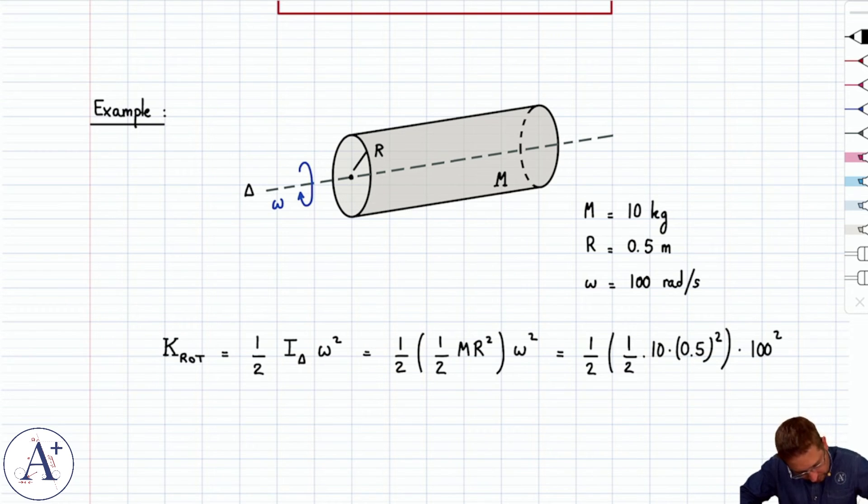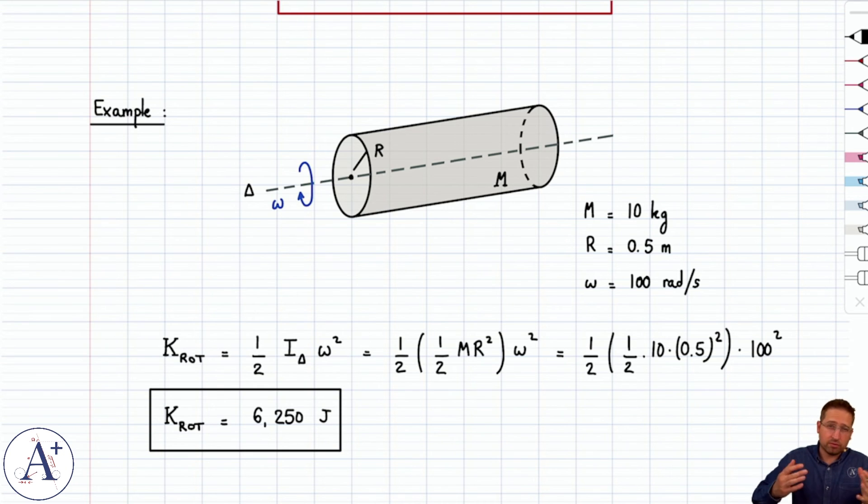And that's going to give us a rotational kinetic energy equal to 6,250. And of course it's in joules because it's still an energy. It's just a different type of kinetic energy, but nonetheless still an energy and therefore still expressed in joules.